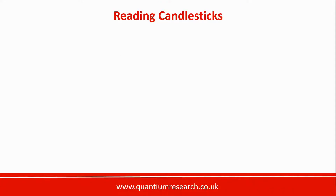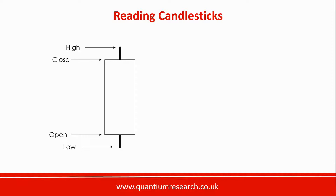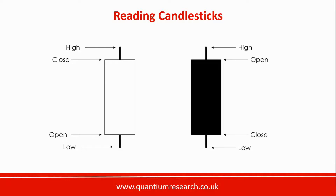Let's start by looking at how we can read candlesticks. A candlestick can either be white or black. Sometimes other colours can also be used, like green and red — you can do whatever you want as long as there's a colour option with your chart platform provider. But it's conventional to use black and white, so long as you can distinguish between the two.